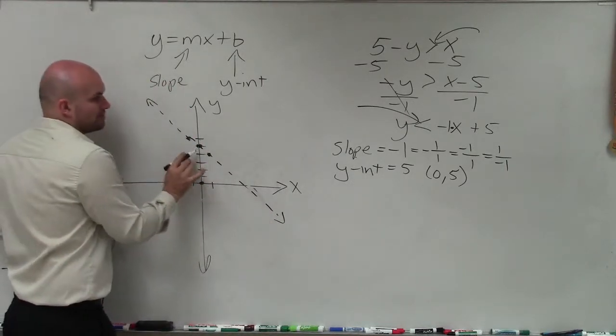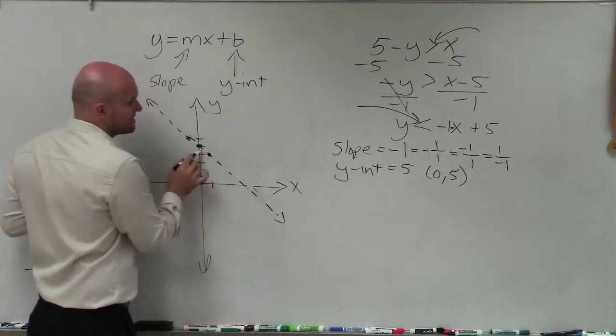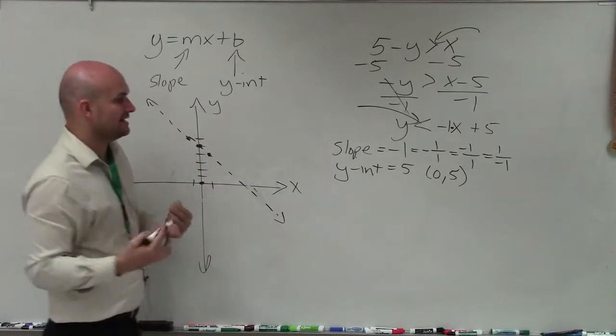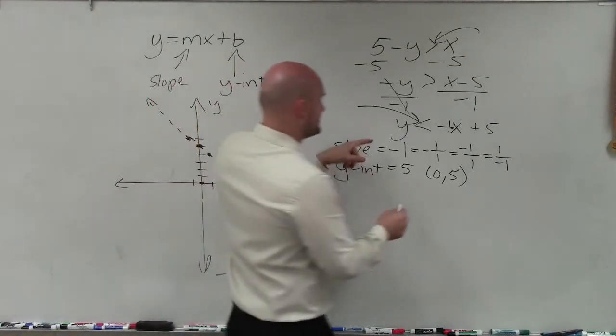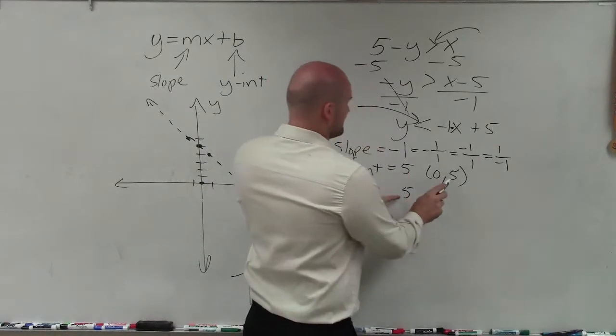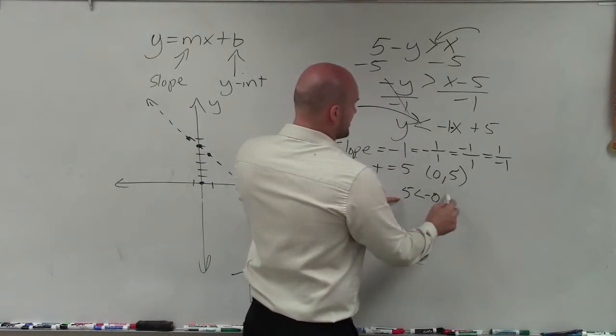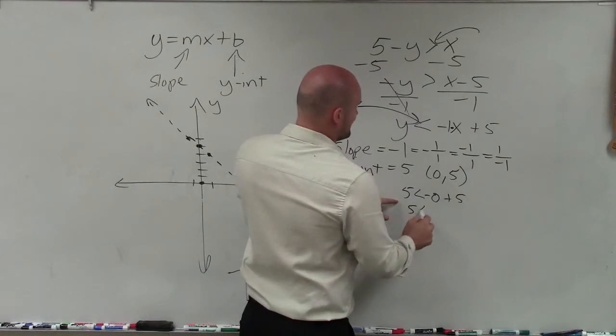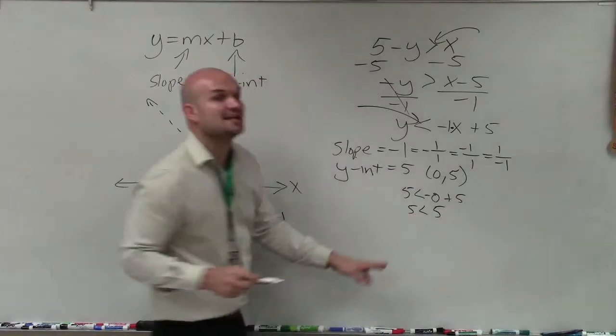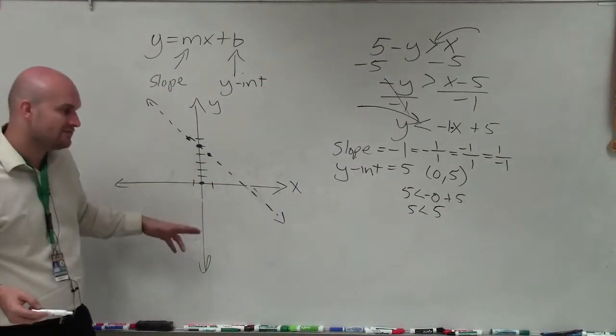And what that means is my line is not part of the solution. If you were to plug in a coordinate point, for instance, 0, 5, which lies on the line, that would not make the inequality true. And let's check our answer. If I say 5, that's in for my y, is less than negative 0 plus 5, we have 5 is less than 5, which that is false. That's why the line is not part of the solution.